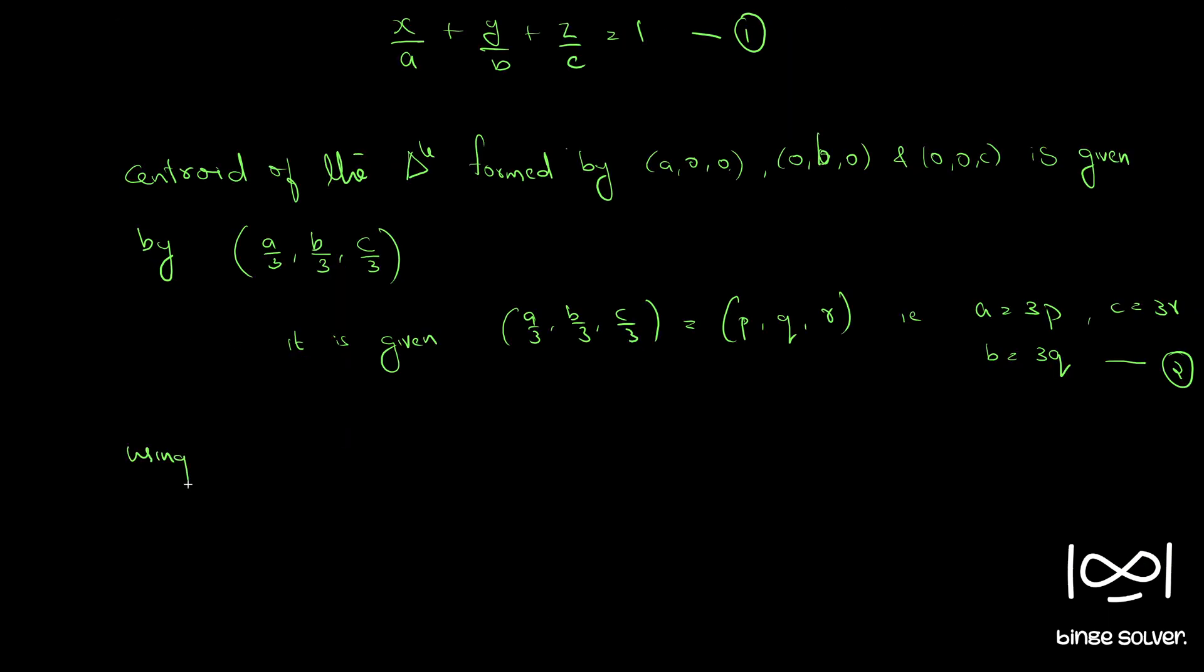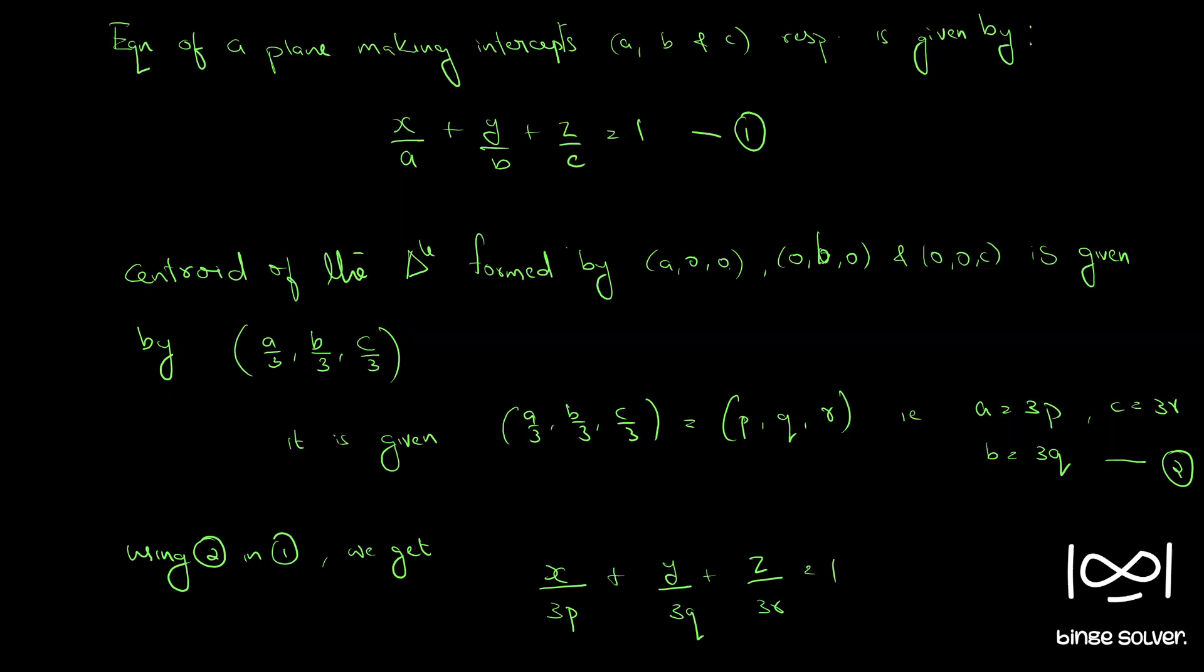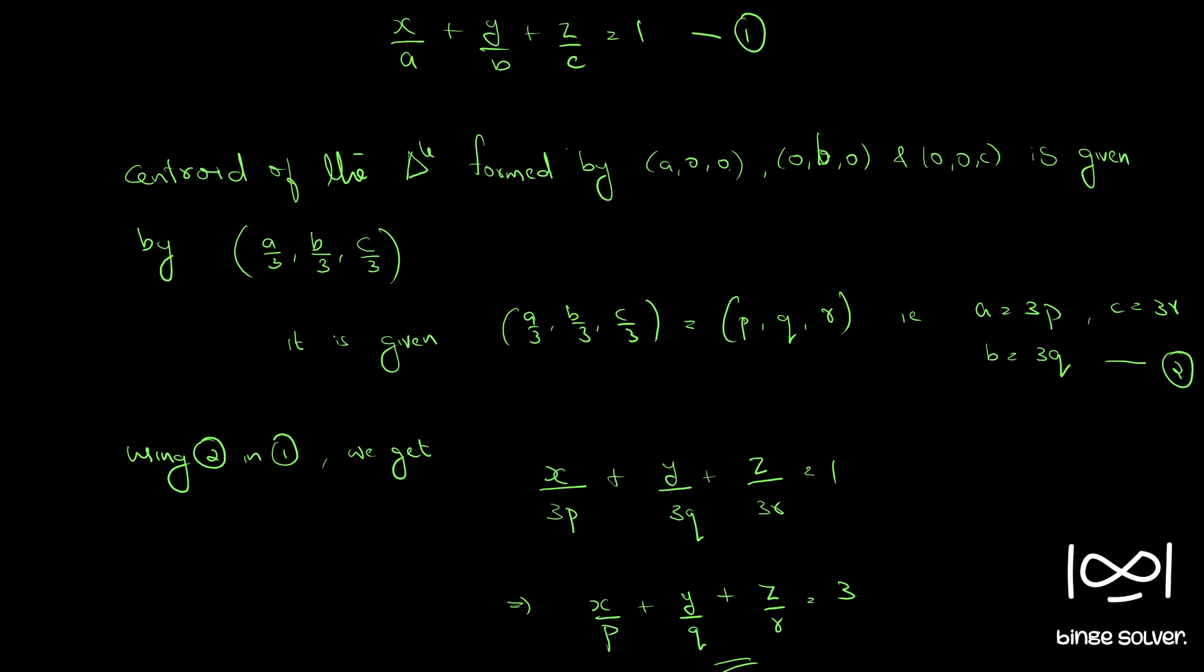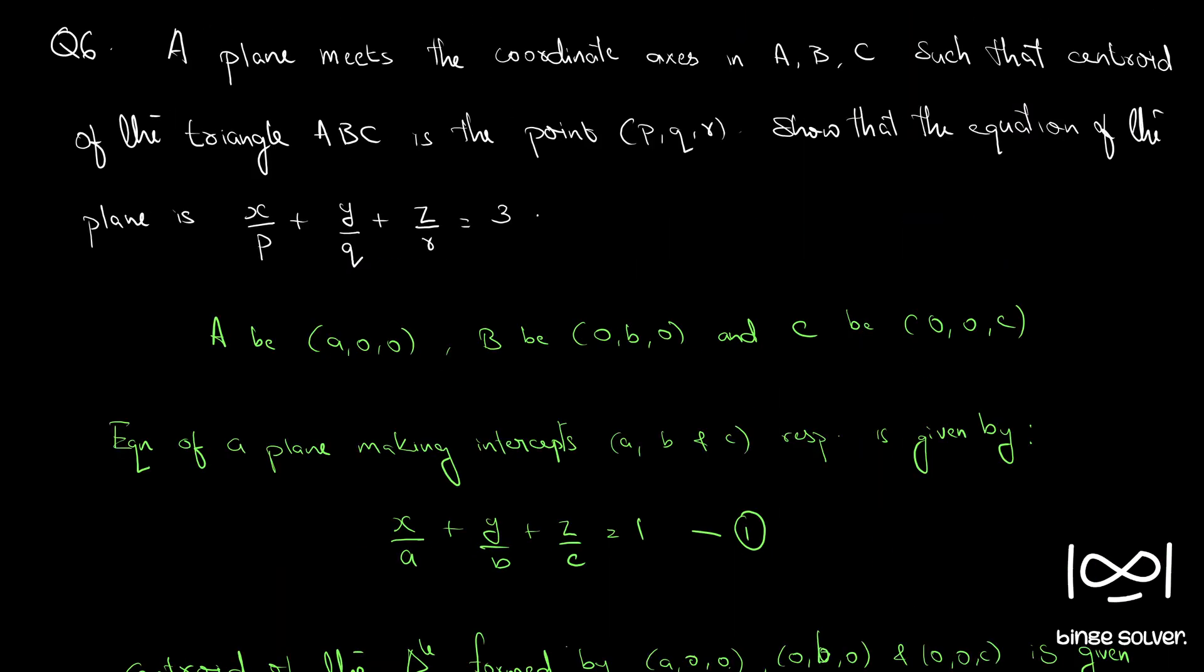Using equation 2 in equation 1, we get x/3p + y/3q + z/3r = 1, or we can move the 3 to this side. So that implies x/p + y/q + z/r = 3. So this is the final equation. This is the solution to question 6.